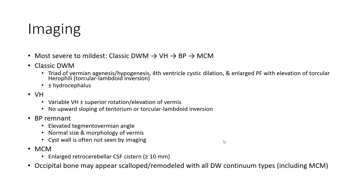Imaging from most severe to mildest: classic Dandy-Walker malformation, vermian hypoplasia (VH), Blake's pouch (BP), and mega cisterna magna (MCM). Classic Dandy-Walker malformation features hypoplastic vermis, cystic dilatation, upward rotation of the vermis with torcular-lambdoid inversion, plus or minus hydrocephalus.